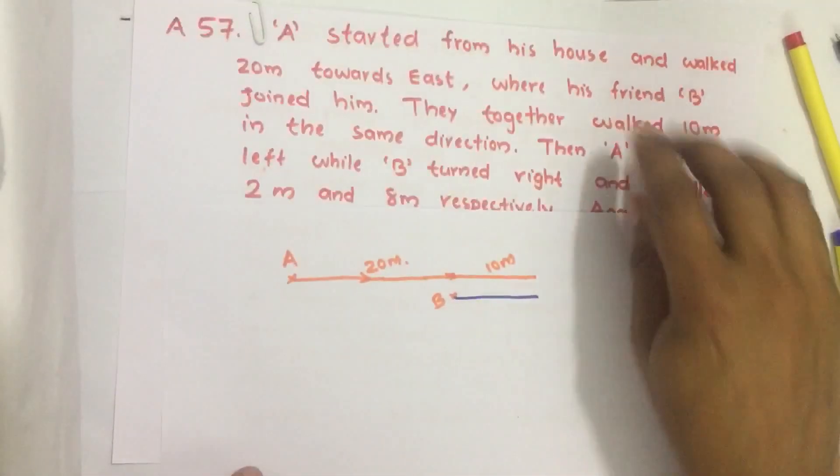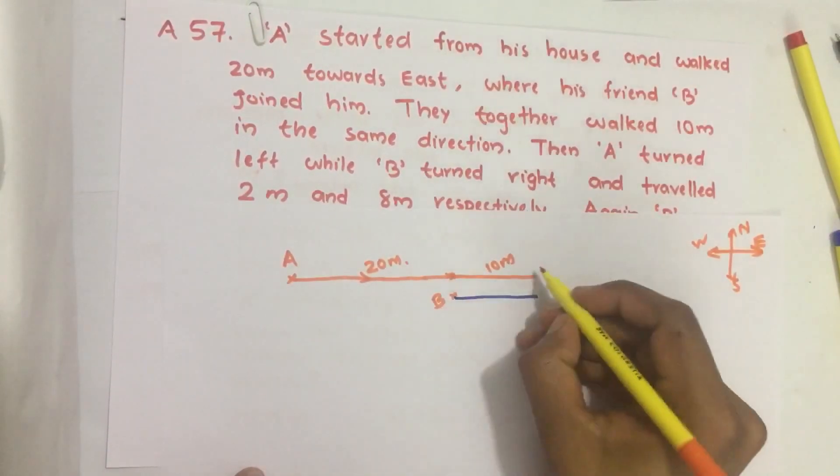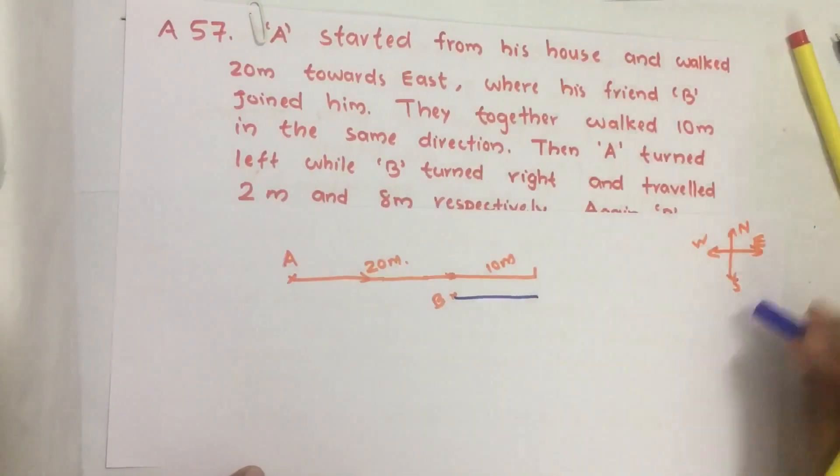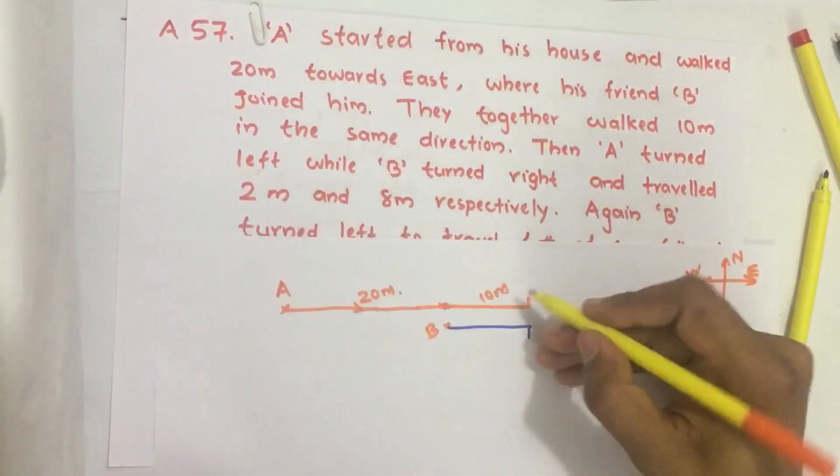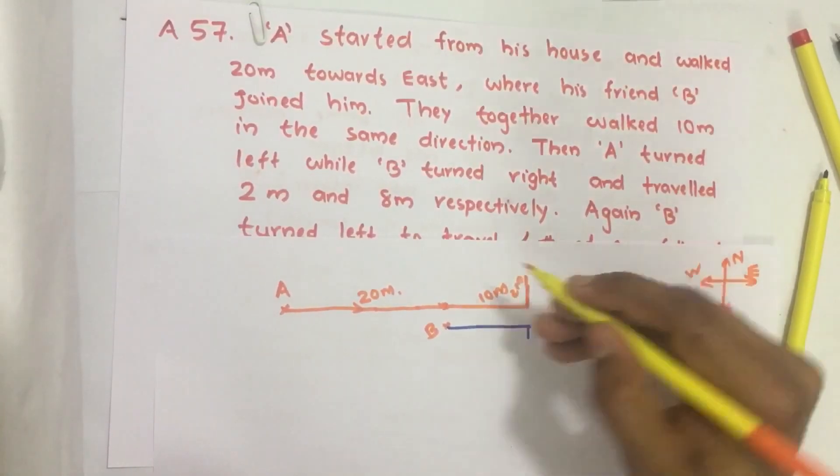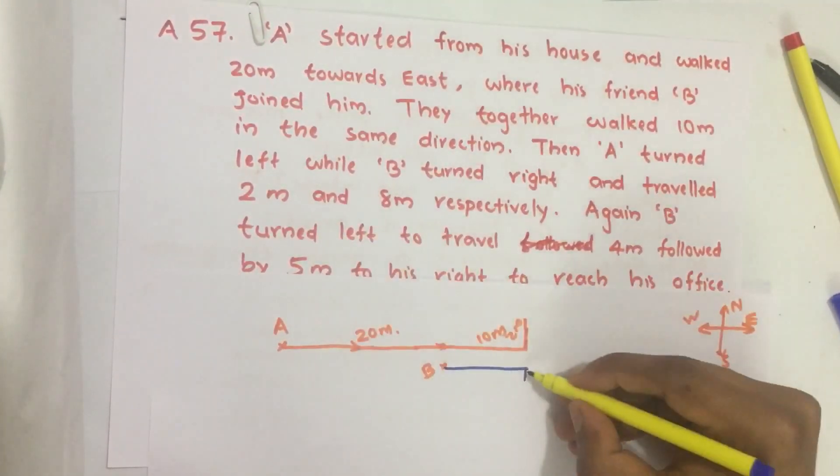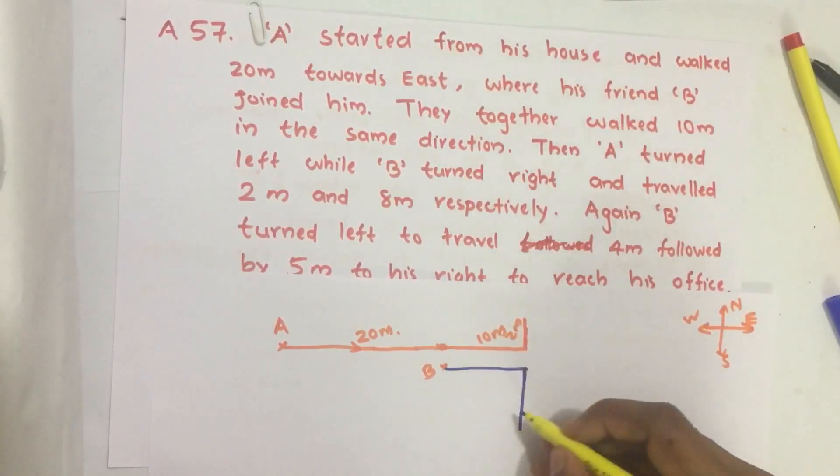From there A turned left. If he is going in this direction his left is this and B turned right, his right is this side. And A walked 2 meters towards his left while B walked 8 meters towards his right.